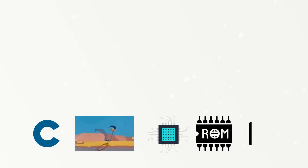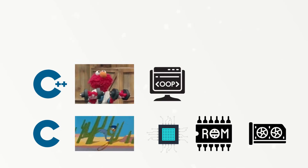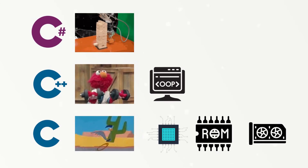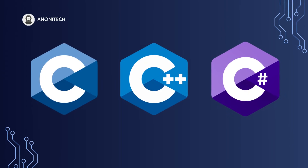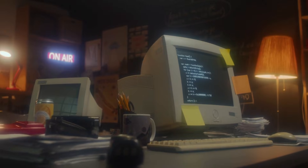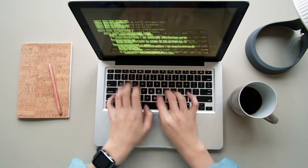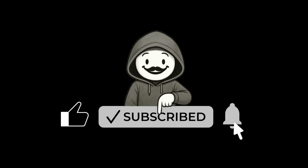So, to sum it up: C is the foundation — fast, powerful, and close to the hardware. C++ builds on that foundation with more features, making it perfect for complex, performance-heavy software. C Sharp modernizes the family, giving developers safer and faster ways to build apps, especially in the Windows and gaming worlds. They may share the same letter, but C, C++, and C Sharp each play a very different role in programming history. And learning even one of them can give you a huge advantage as a developer. If you enjoyed this breakdown, don't forget to like, subscribe, and hit the bell so you don't miss the next deep dive.